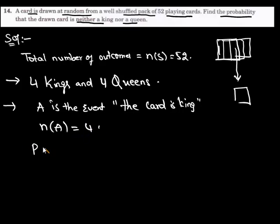And the probability of event A is number of favorable outcomes to A, which is 4, to the total number of outcomes, which is 52. Both numerators and denominators contain the same factor of 4. On dividing both with 4, we get 1 upon 13.